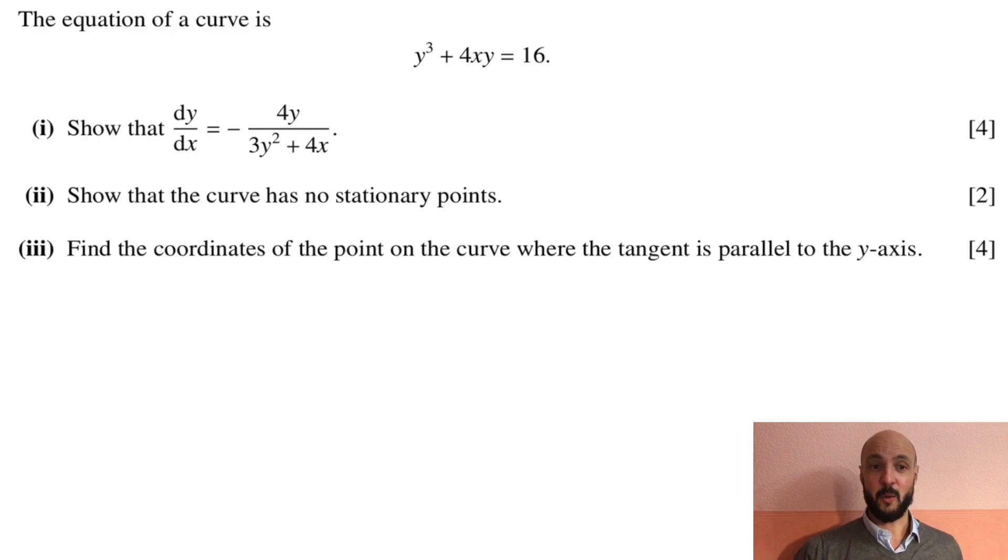So to start off as normal I'll read through the question. The equation of a curve is y cubed plus 4xy equals 16. Part 1: Show that dy/dx equals minus 4y over 3y squared plus 4x.